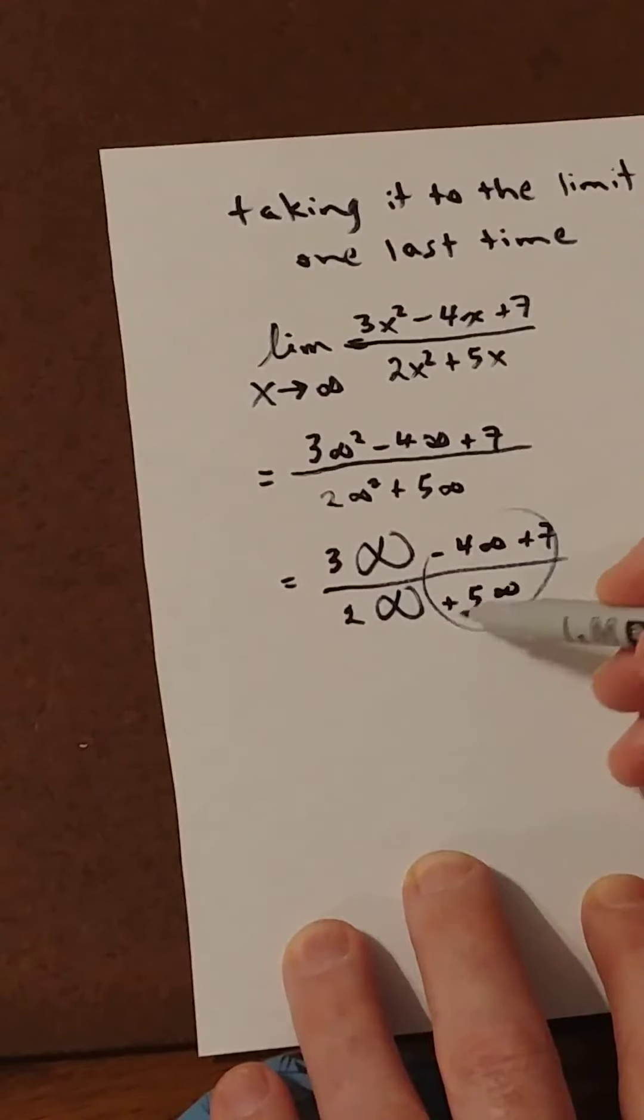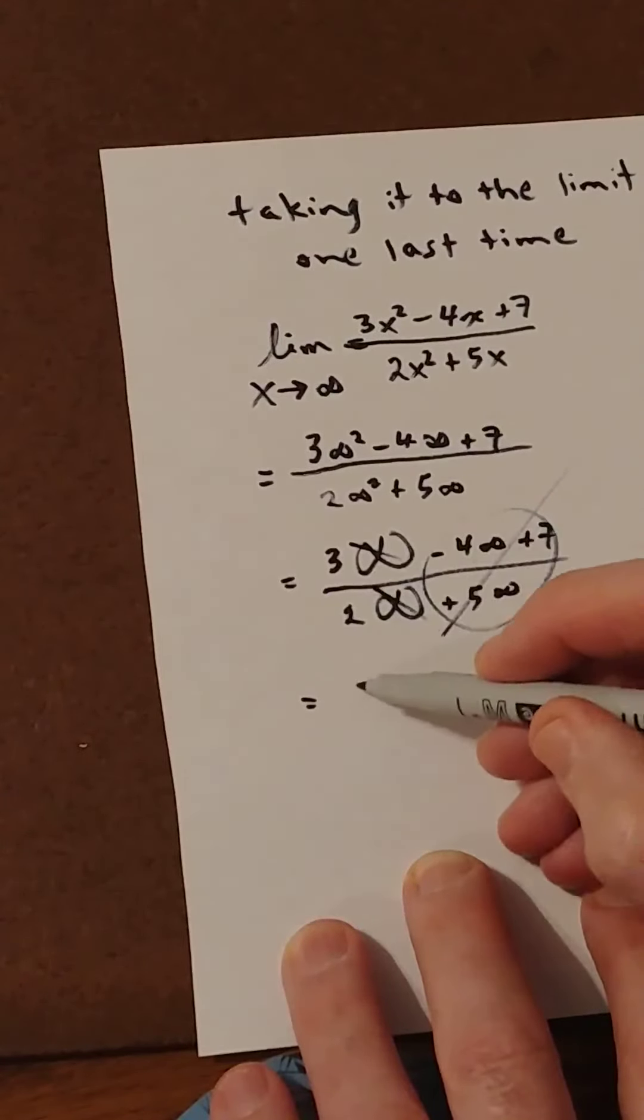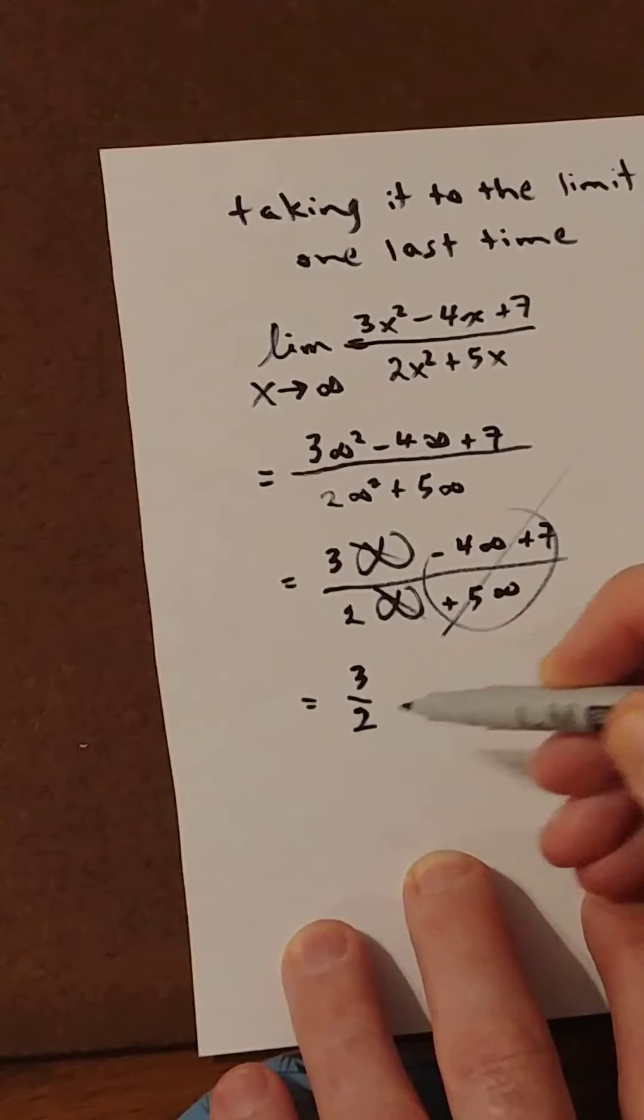Well, these terms are small in comparison to that infinity squared, so they disappear. These infinities then cancel, so, as expected, 3 over 2.